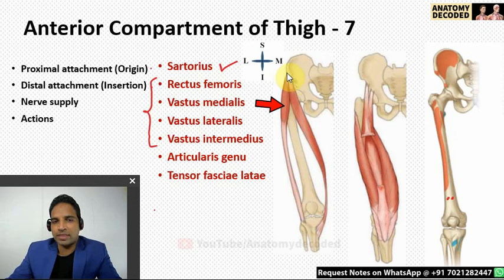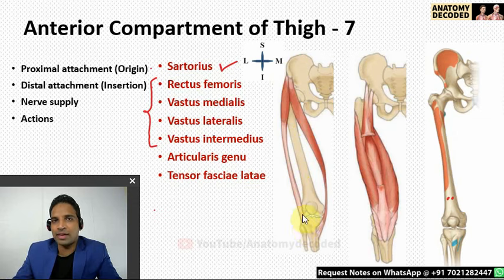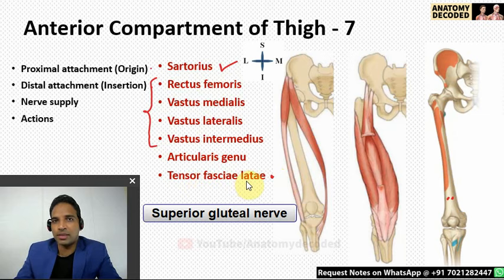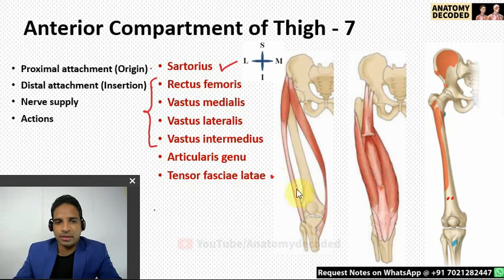Tensor fascia lata has its proximal attachment on the outer aspect of the iliac crest, about five centimeters behind the anterior superior iliac spine. Its distal attachment continues as the iliotibial tract, which goes up to the lateral aspect of the tibia. Nerve supply is by the superior gluteal nerve — the same nerve that supplies gluteus medius and minimus. Its action is to stabilize and help in extension at the knee joint.